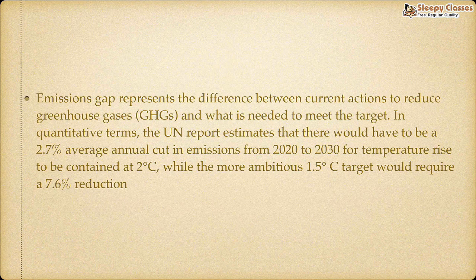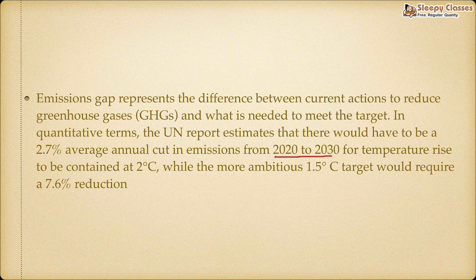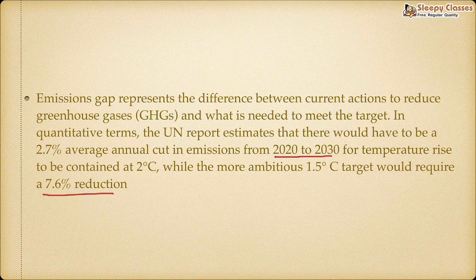The emissions gap represents the difference between our current actions to curb climate change and reduce greenhouse gases, and what is required to meet our targets. In quantitative terms, this report says a 2.7% average annual cut in emissions from 2020 to 2030 is needed to limit temperature rise to 2 degrees Celsius. And to achieve the 1.5 degree Celsius target, a 7.6% reduction in emissions is required. Currently we are falling quite short of these targets.